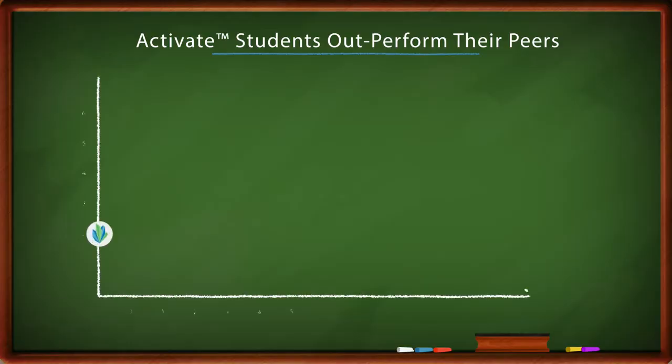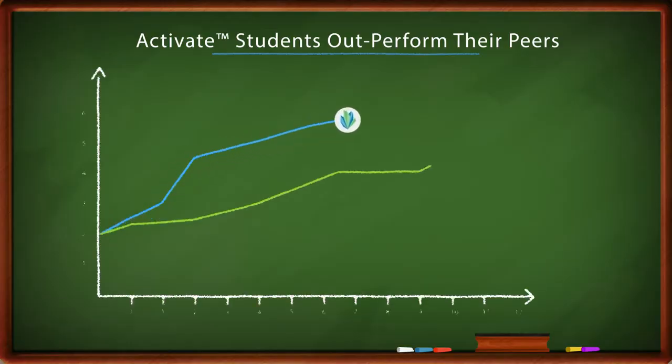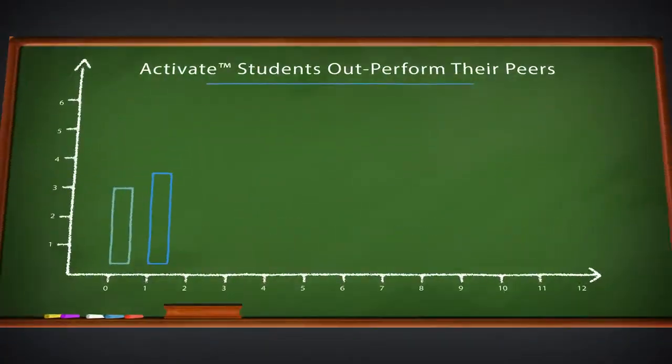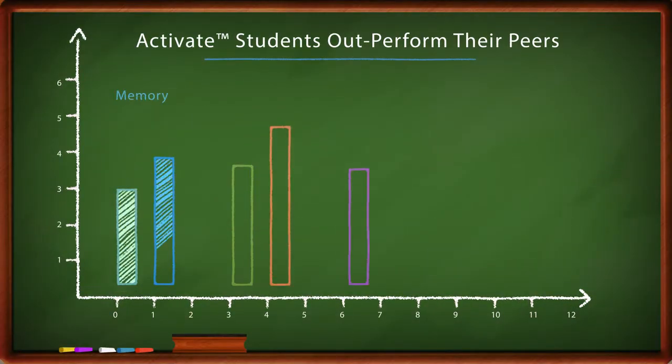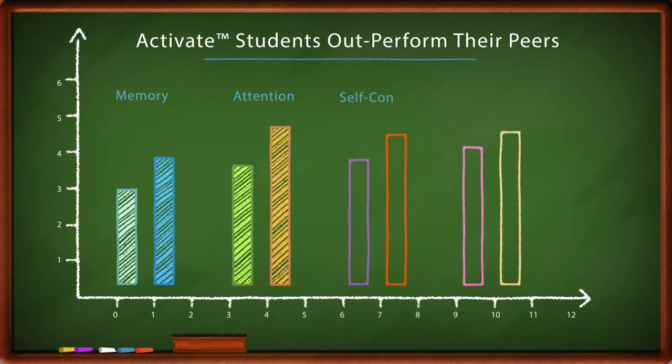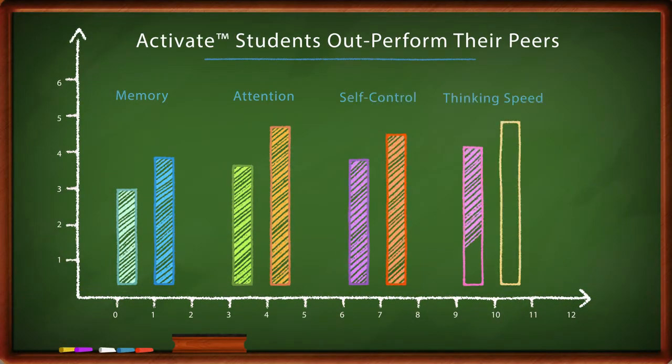Our kids outperform their peers in reading and math because they've also increased their memory, their attention, their self-control, and their thinking speed.